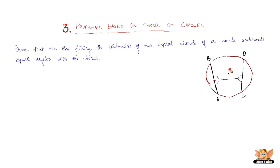Join OE and join OF. Since chords AB and CD are equal, they are equidistant from the center — therefore OE equals OF. Since OEF is a triangle and OE and OF are two equal sides, it is an isosceles triangle.